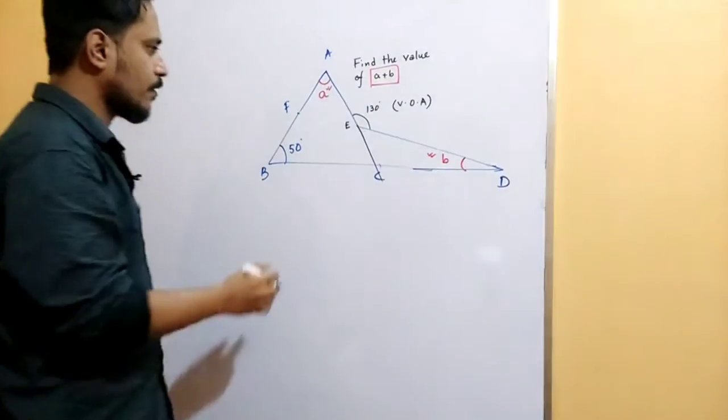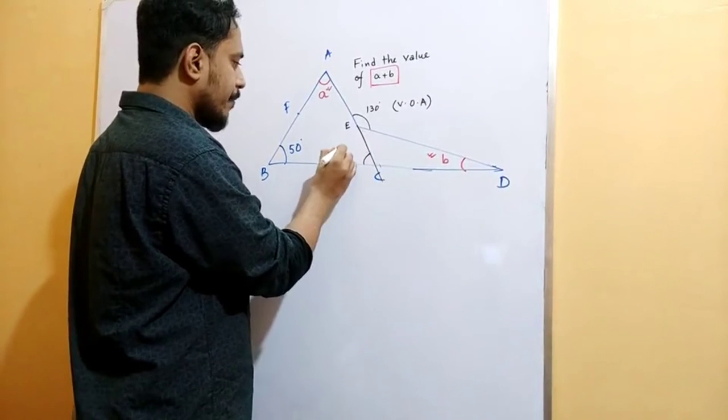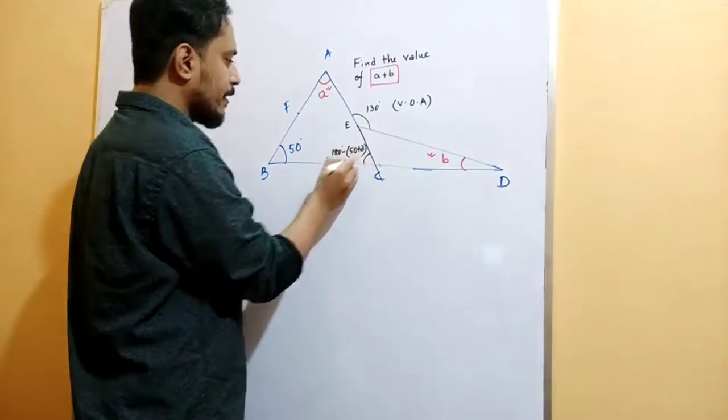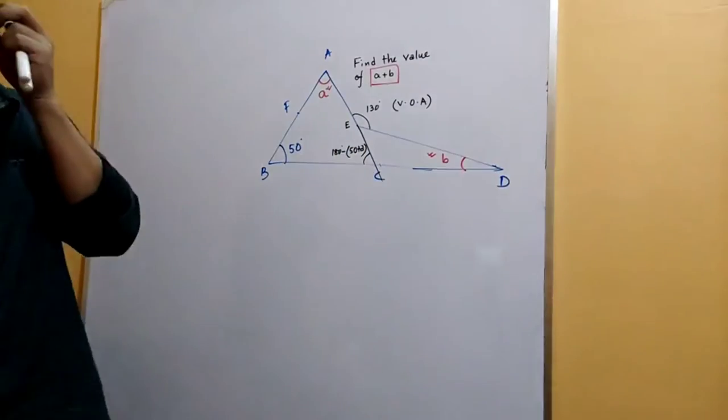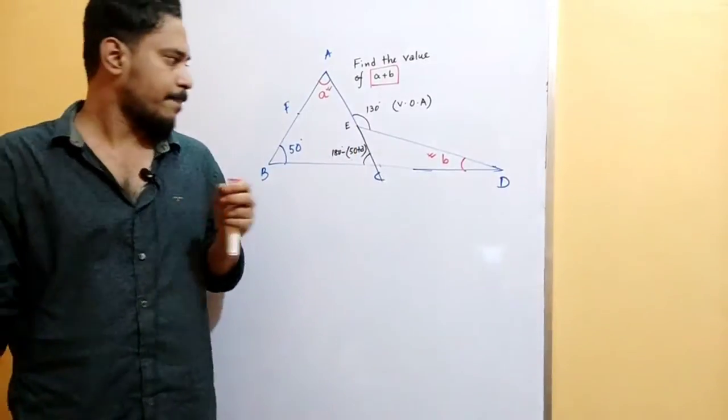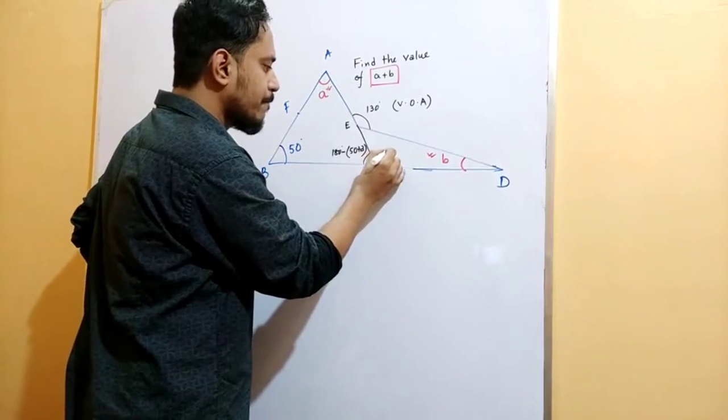Now, what will be this angle? 180 minus 50 plus A. The three angles, the sum of all angles is 180. So this angle is 50 plus A.